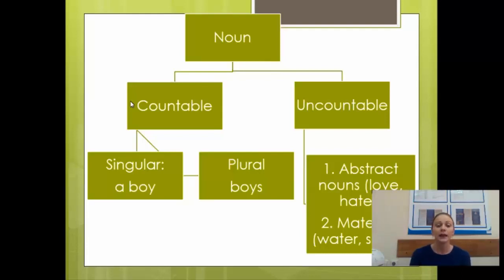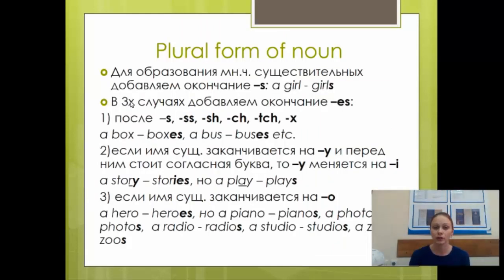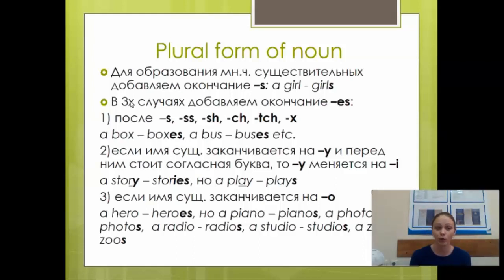Если мы говорим об исчисляемых существительных, здесь появляется категория числа: singular и plural. Например, a boy — единственное число, boys — множественное. По общему правилу для образования множественного числа мы добавляем окончание -s: a girl — girls. В трёх случаях добавляем -es: после -s, -sh, -ch, -tch, -x — окончание читается как [iz]. Например, a box — boxes, a bus — buses.